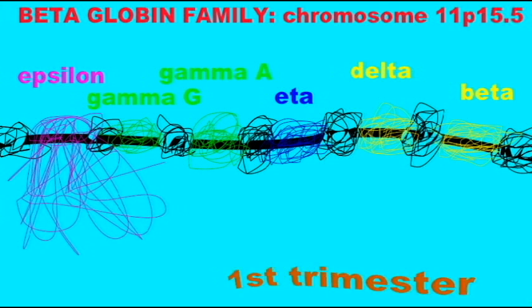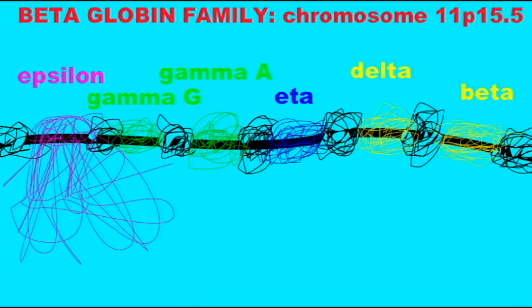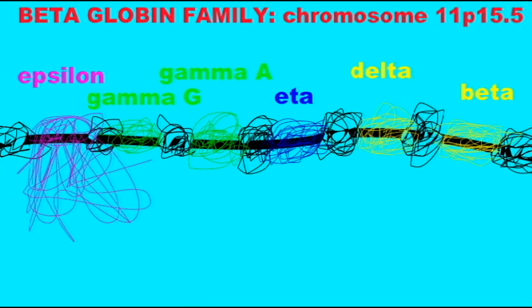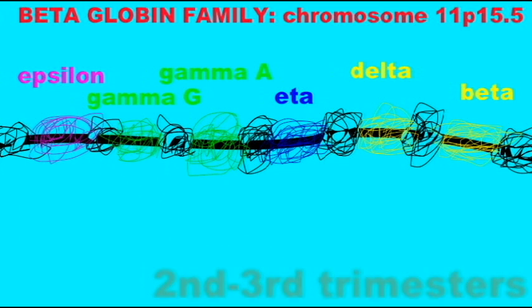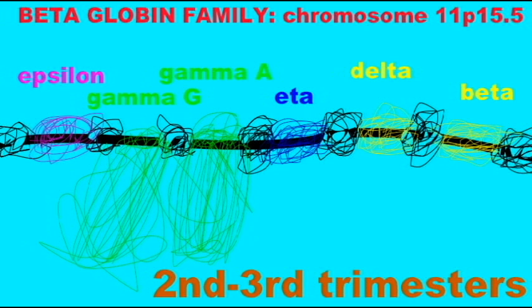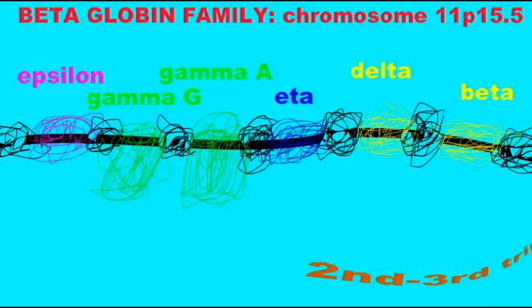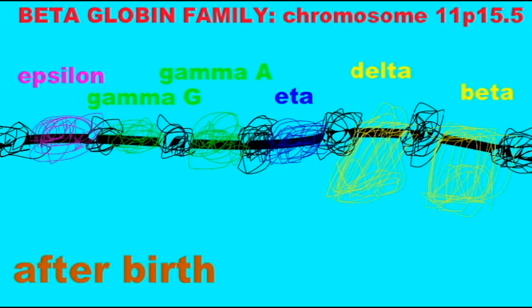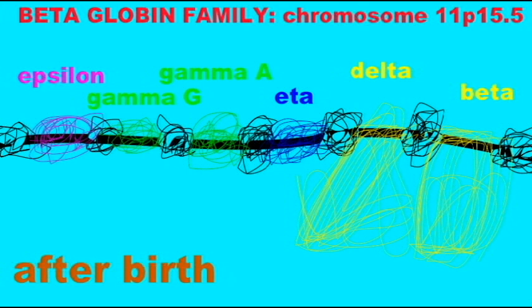In the second and third trimesters, the gamma hemoglobin genes are euchromatin, but at birth these then become heterochromatin and are once again inactivated. After birth, the beta and delta genes are then euchromatin and will remain so for the remainder of life.